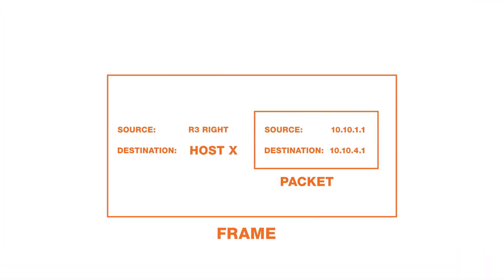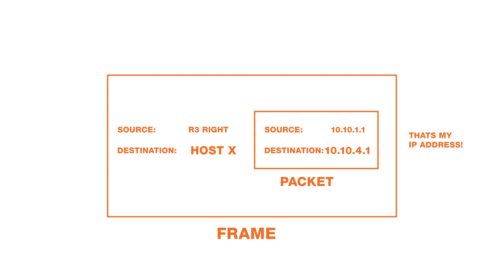The destination gets the frame, sees its MAC address, opens it up, and for the first time in the story, a device says: yes, that's my IP address too. The IP header is now stripped off, and the higher layer data is sent up the networking stack on the destination for processing.